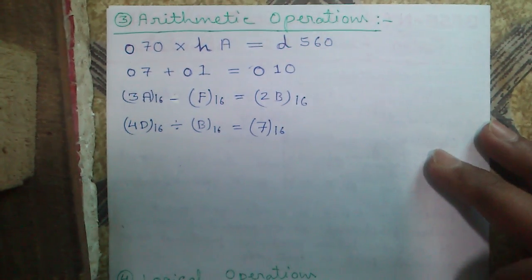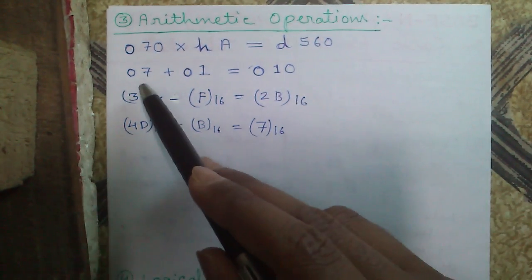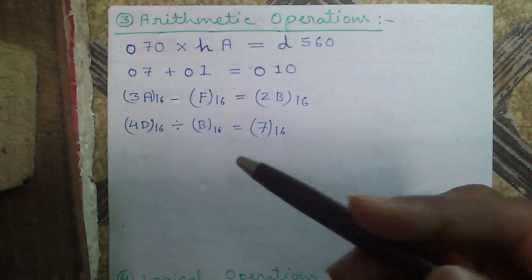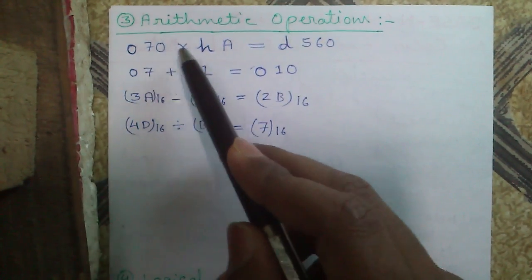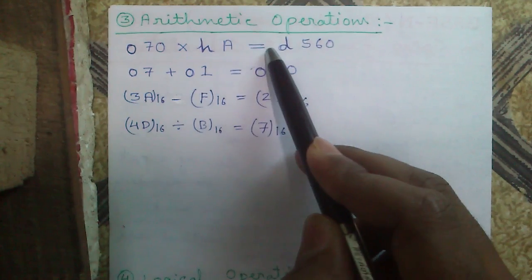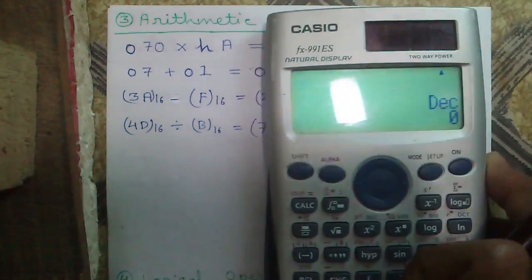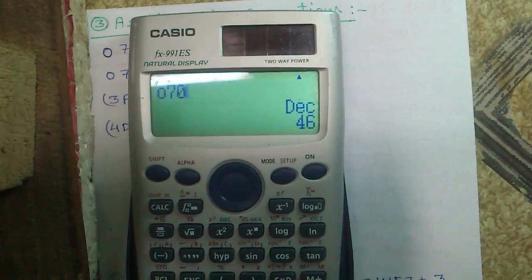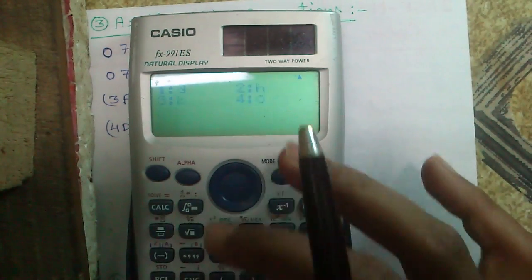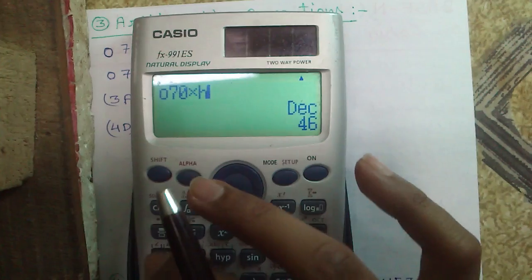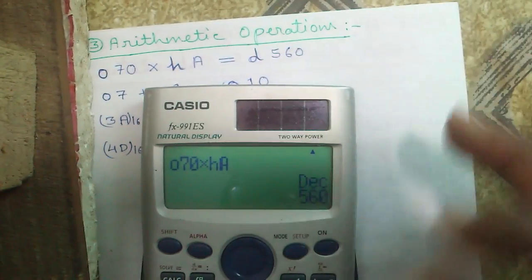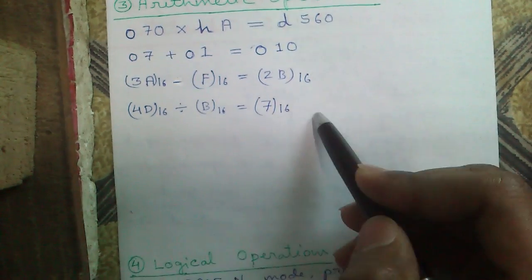You can also perform arithmetic operations. You can perform arithmetic operations using the same base, that is octal 7 plus octal 1, output is octal, or using heterogeneous base, that is octal 70 into hexadecimal a, output in decimal. Output is 560 in decimal. You can do this yourself.